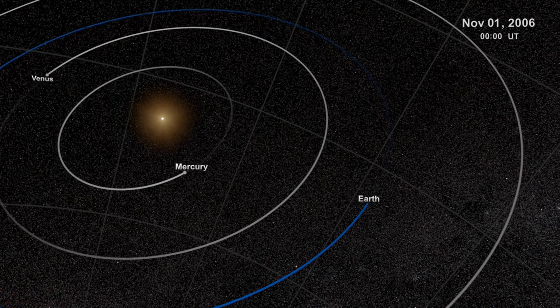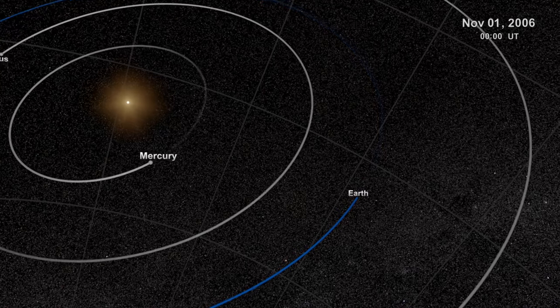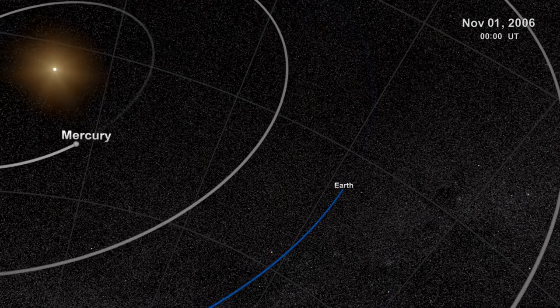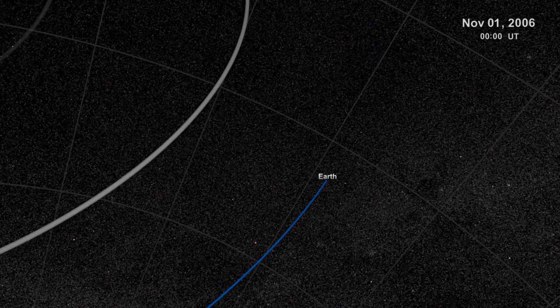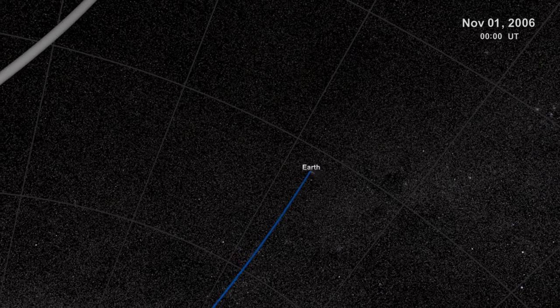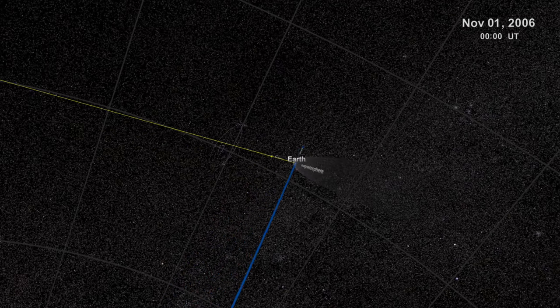NASA's Goddard Space Flight Center, in cooperation with international partners, manages a fleet of spacecraft monitoring all aspects of the heliosphere. This fleet is called the Sentinels of the Heliosphere.